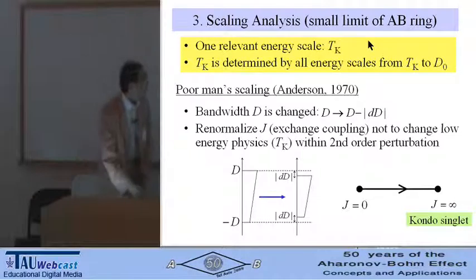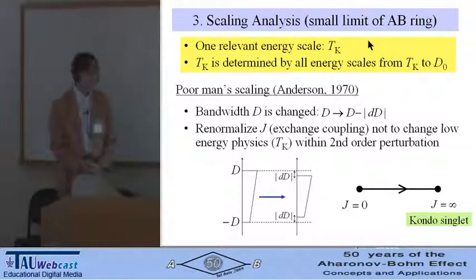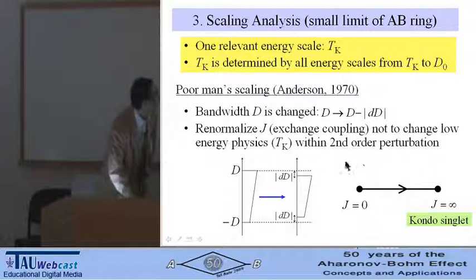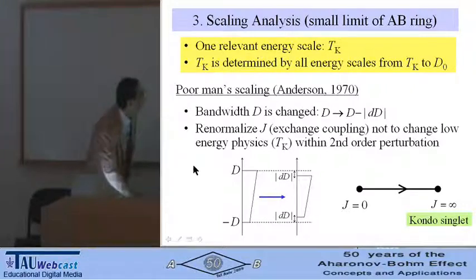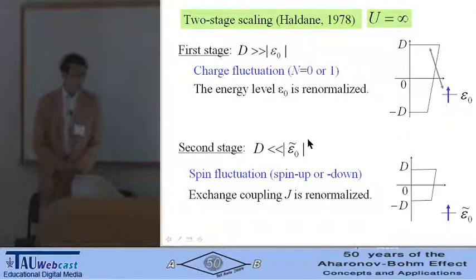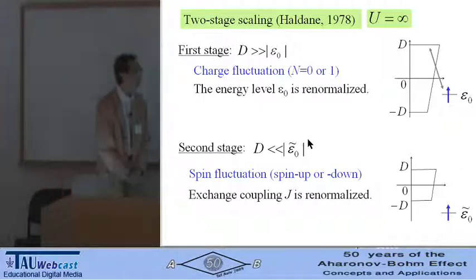Bandwidth D is gradually changed and renormalized exchange coupling between localized spin and leads, so as not to change low energy physics within the second order perturbation. Technically, we adopt Haldane's two-stage scaling, assuming infinite U.